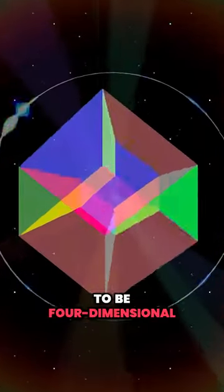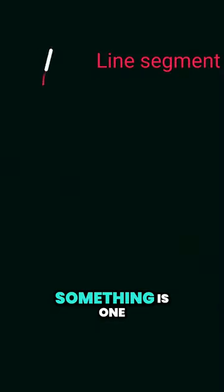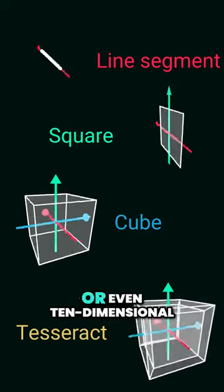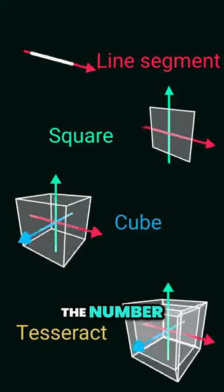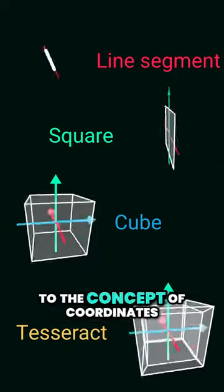What does it mean for an object to be four-dimensional? What determines if something is one, two, three, four, or even ten dimensional? The number of dimensions is directly linked to the concept of coordinates. A line is a one-dimensional object.